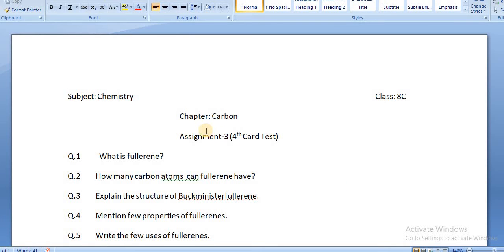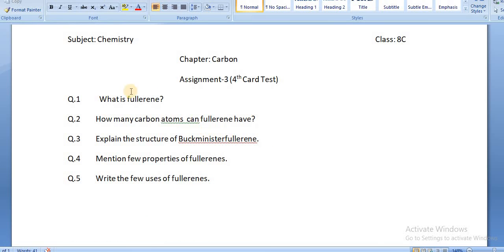Now we have got the assignment. First question is: What is fullerene? Question number two: How many carbon atoms can fullerene have? Question number three: Explain the structure of buckminsterfullerene. Question number four: Mention few properties of fullerenes. And question number five: Write the few uses of fullerenes. So complete this assignment and send it.